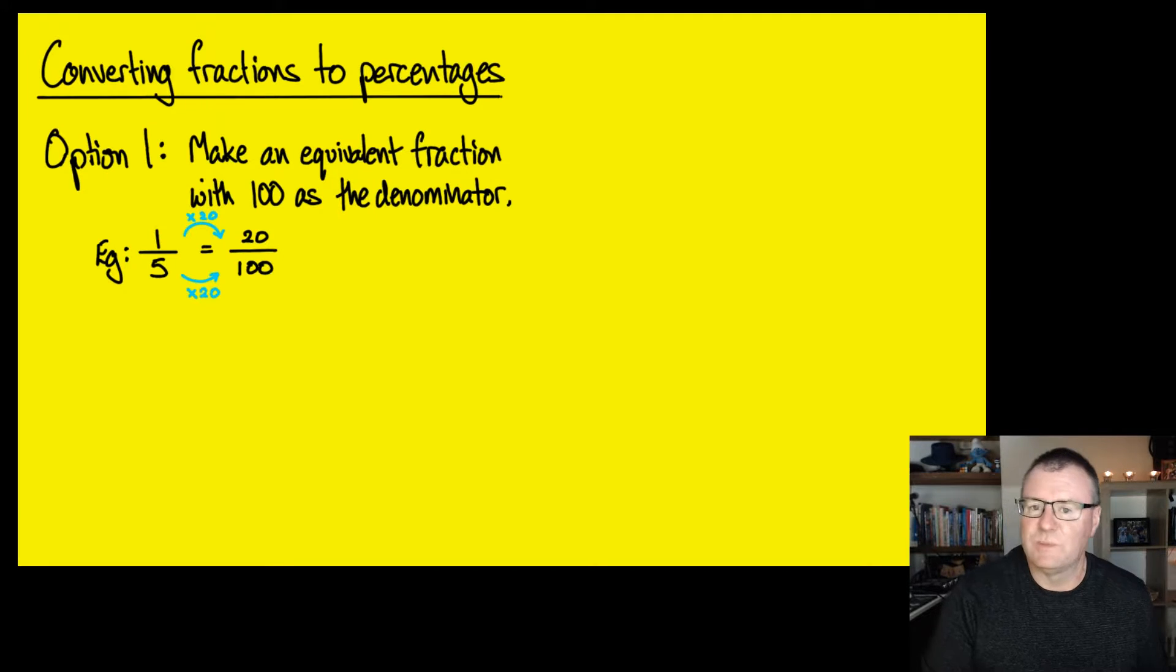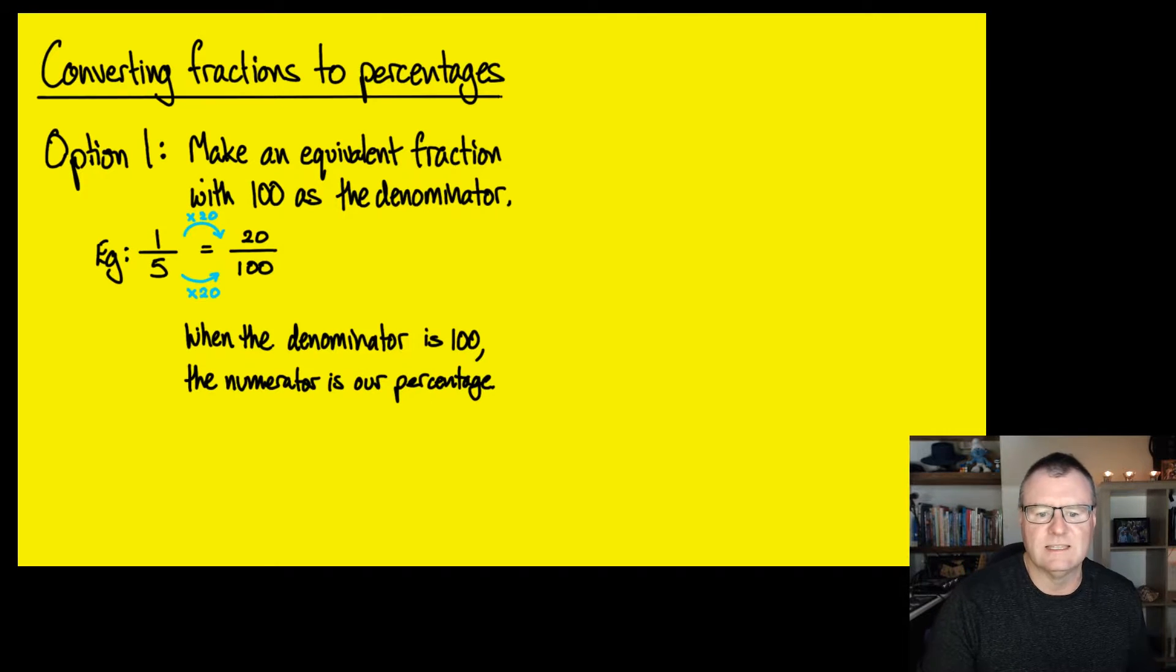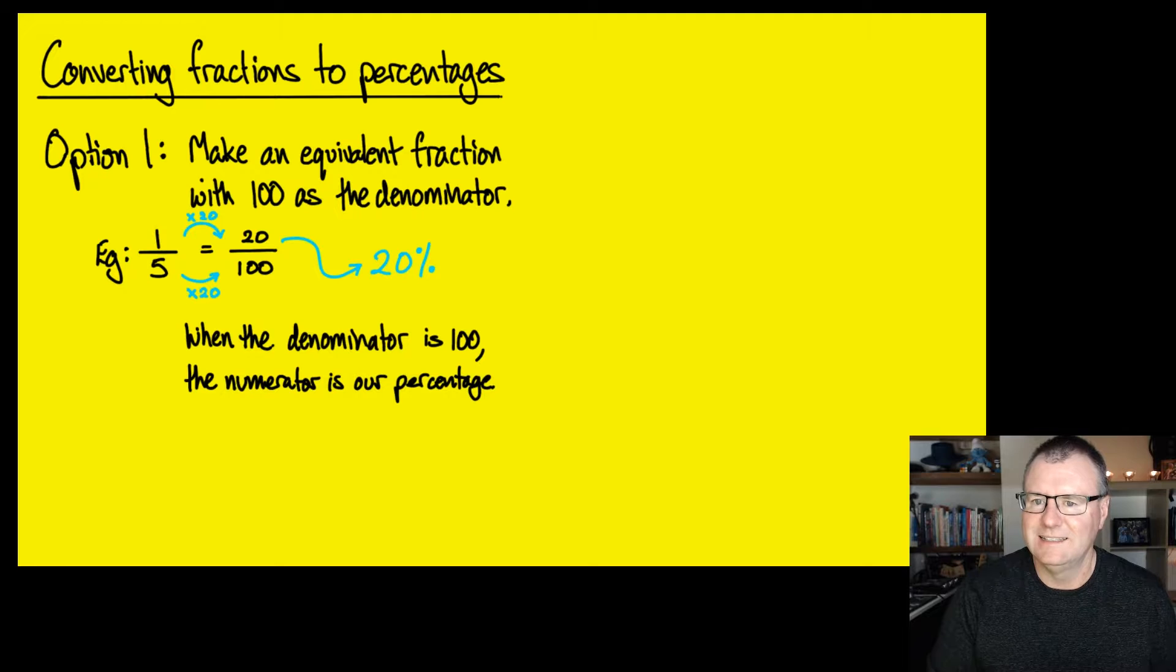Now, how do we get that into a percentage? Well, a percentage is something over 100. So I look at the number in the numerator. In this case, it's the 20. The numerator is our percentage. So the number on the top, in this case, the 20 is our percentage. So the percentage is 20%. So 20 over 100 is 20%.